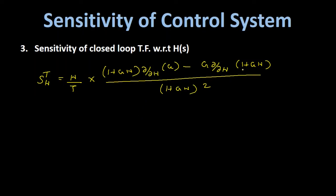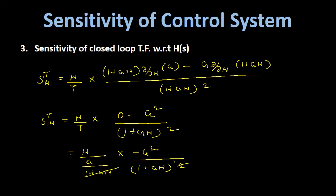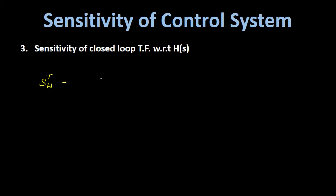Differentiating G/(1+GH) with respect to H: since G is independent of H, its partial derivative is 0. We get 0 minus G·G divided by (1+GH)², giving -G²/(1+GH)². Substituting T = G/(1+GH) and simplifying, the (1+GH) and G terms cancel, yielding S_TH = -GH / (1+GH).